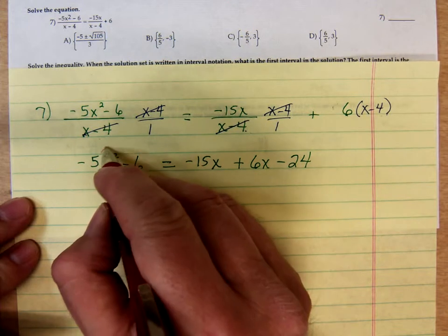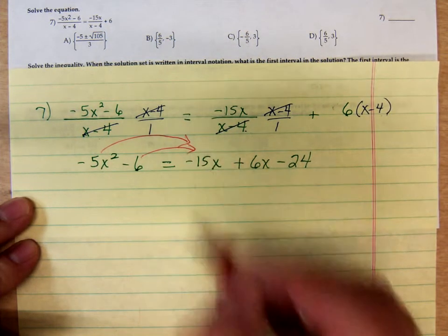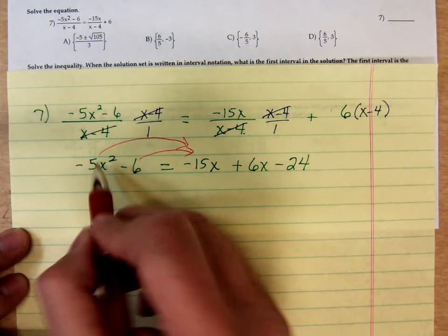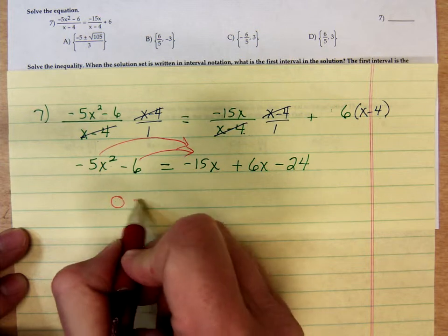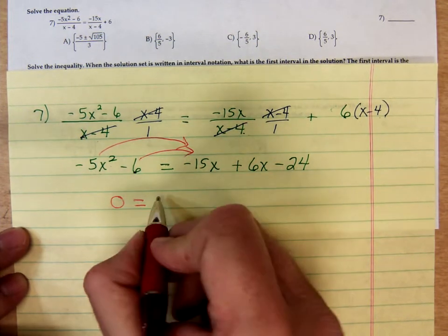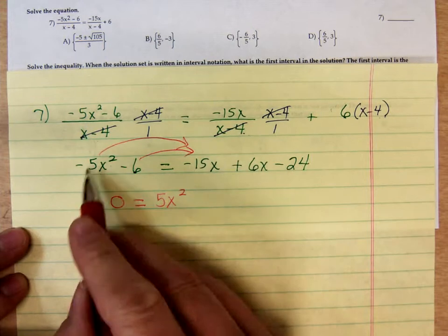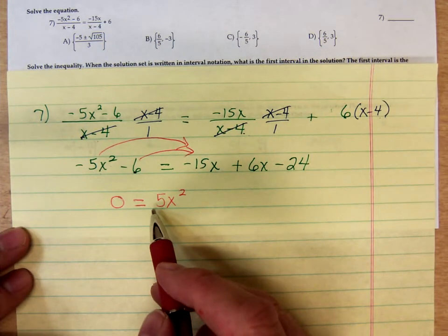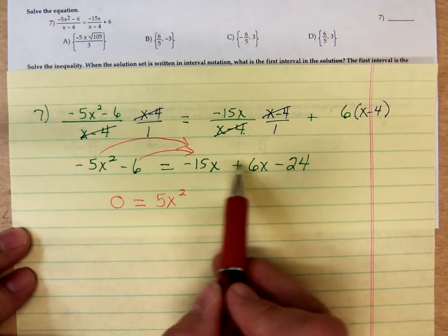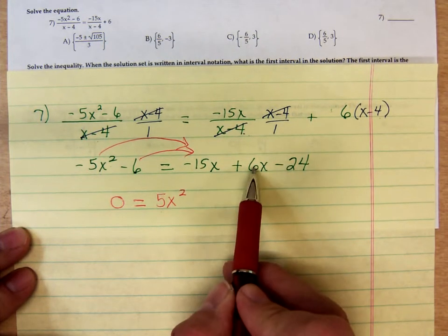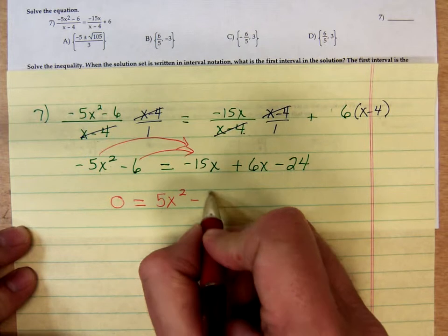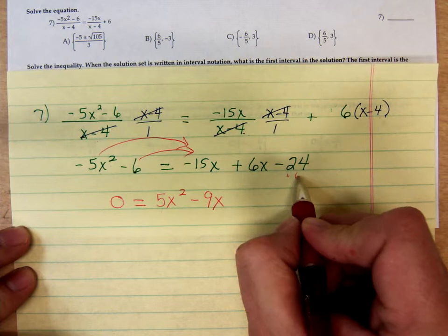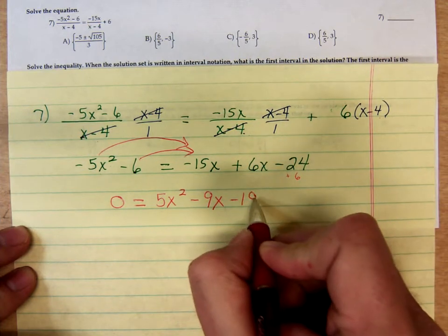So here's what I'm going to do. I'm going to move these over to the right and get a 0 over here on the left. So that would be adding 5x squared. Combining the x's. Negative 15 plus 6. That's a negative 9x. Moving that 6 over would be adding 6. So minus 18.